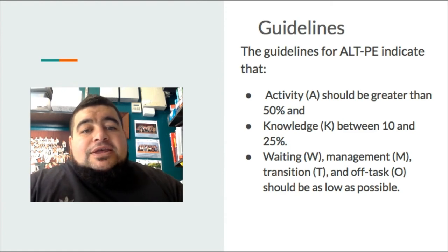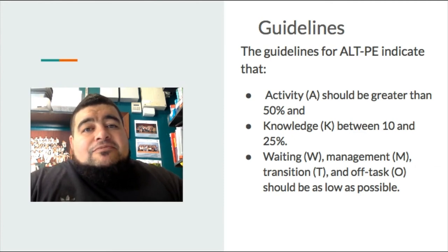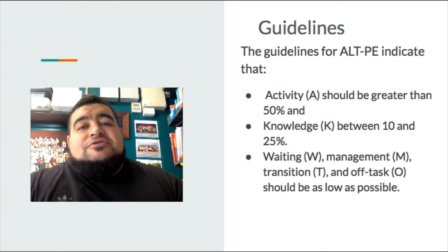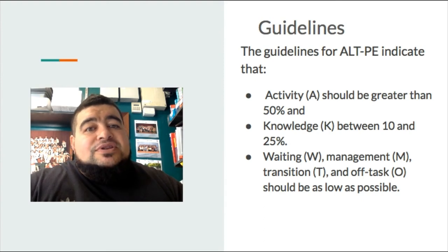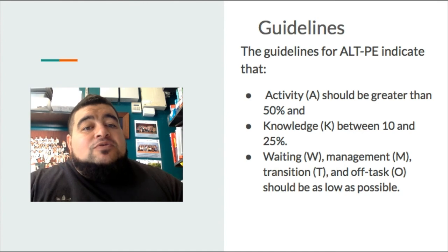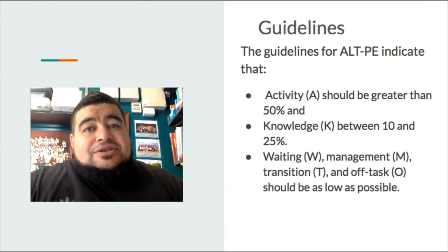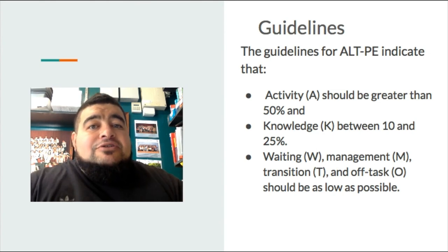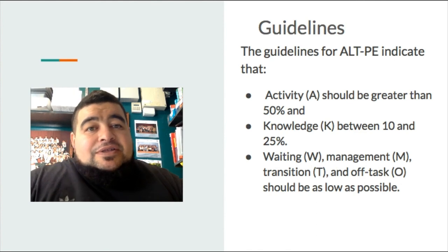The guidelines for ALT-PE are that activity during your lesson should be at least 50% or greater throughout the entire time. Knowledge time — instruction or demonstrations — should be between 10% and 25%. The other categories, such as waiting, transitions, management, and off-task behaviour, should all be as low as possible, close to 0%. Kids need to be getting more reps in, because studies show that with more practice they improve and get better at the skill, rather than sitting and listening to you talk or moving between activities. Everything needs to be set up, transitions need to be short, and we need to get students having time on task so they can learn better and learn more.